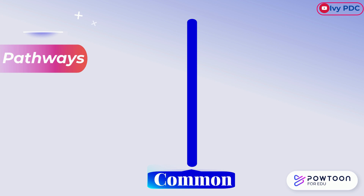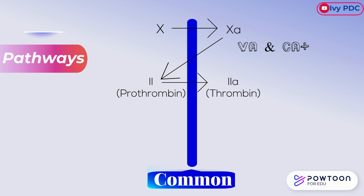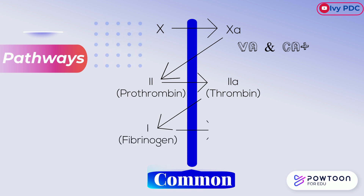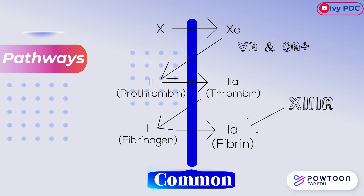The common pathway begins with the activation of factor 10 to factor 10a. With a cofactor, factor 5a and calcium, this converts factor 2 — which is prothrombin — to factor 2a, known as thrombin. Factor 2a converts factor 1, known as fibrinogen, to fibrin. Factor 13 then stabilizes the fibrin clot.